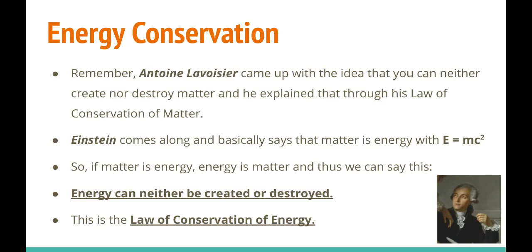Once you break things down to the atomic level and even smaller — what protons, neutrons, and electrons are made of — what we find is that pretty much all of life is made of matter and atoms, so all of those things must be made of energy. They're all little forms of energy that radiate in different ways. Einstein shows this in the equation E = mc², where energy equals mass times the speed of light squared. It's just saying that mass is energy.